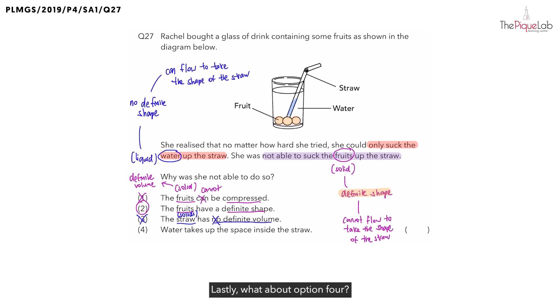Lastly, what about option four? They said that the water is going to take up the space inside the straw. Now, is this statement true? Yes. Remember, water is a form of matter. And we know matter is going to take up space. But even though this is true, does option four explain why she was not able to suck up the fruits? No. It actually does not explain. And since it does not explain, can I choose option four? No. Which means the only possible answer is going to be option two.